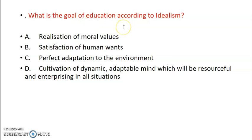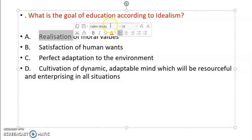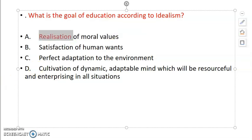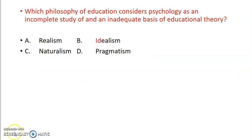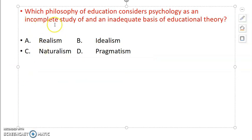What is the goal of education according to idealism? Idealism's main goal should be: realization of moral value, satisfaction of human wants, perfect adoption into the environment, or cultivation of dynamic adaptable mind which will be resourceful and entertaining in all situations? So answer is A, that is realization of moral value. Their main belief was realization of moral value, morality, values - all these they gave importance to. Then next: which philosophy of education considers psychology as an incomplete study of an inadequate basis of educational theory? Answer is idealism.